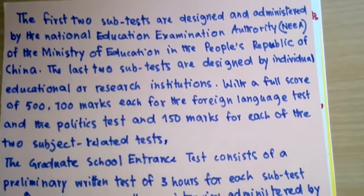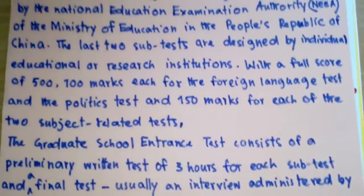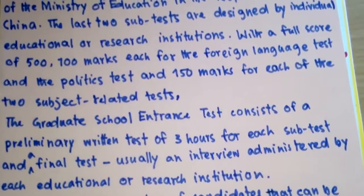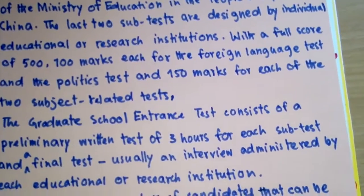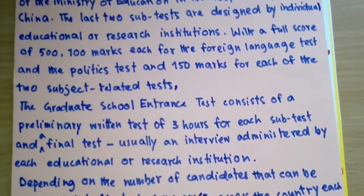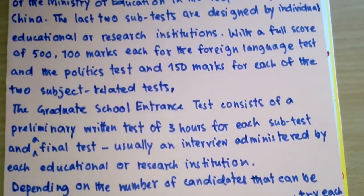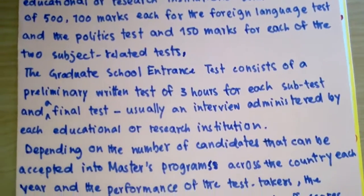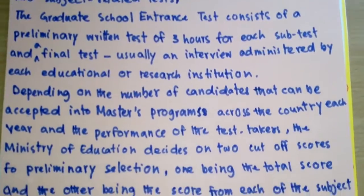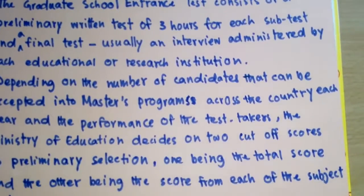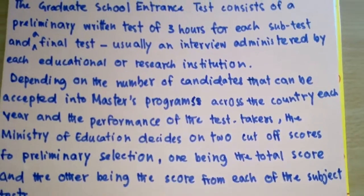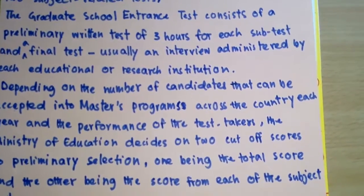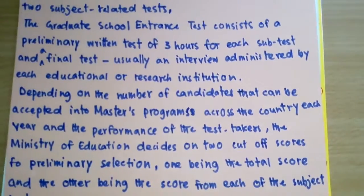The full score is 500: 100 marks each for the foreign language test and the politics test, and 150 marks for each of the two subject-related tests. The graduate school entrance test consists of a preliminary written test of three hours for each sub-test and a final test, usually an interview, administered by each educational or research institution.